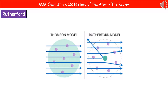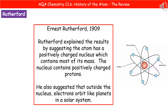This diagram shows what they expected on the left and what they actually found on the right. This doesn't support the plum pudding model, which meant Rutherford had to come up with a new idea for the structure of the atom. He explained the results by suggesting that in the centre of the atom we have a positively charged nucleus containing most of the mass of the atom, including positively charged protons. Outside the nucleus, the electrons are actually orbiting around it like planets in a solar system.